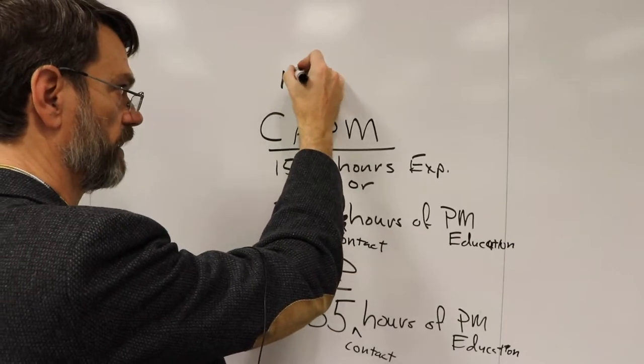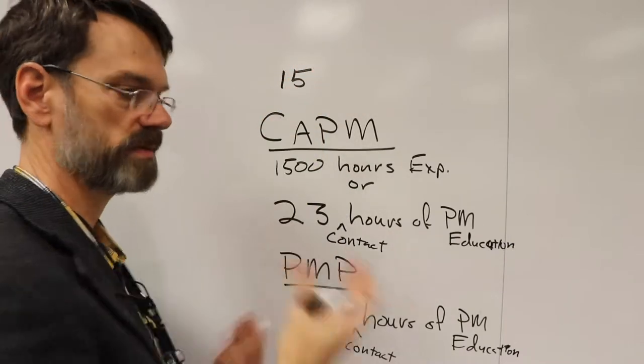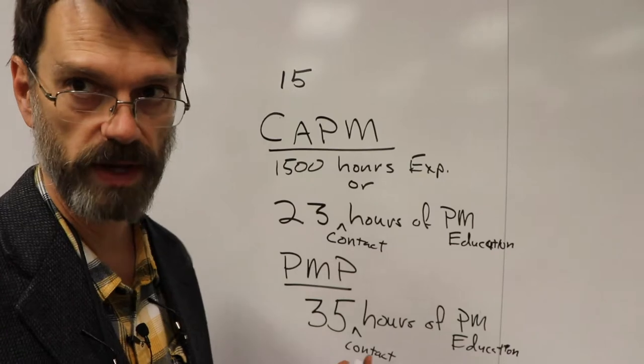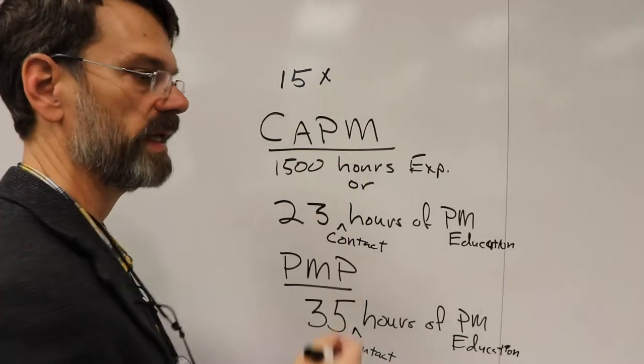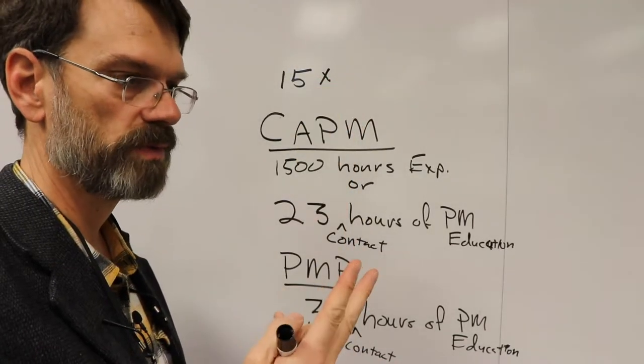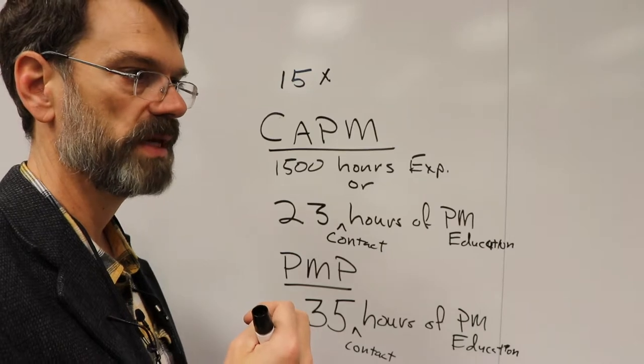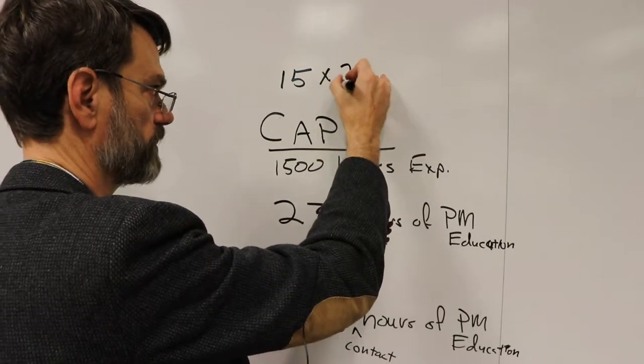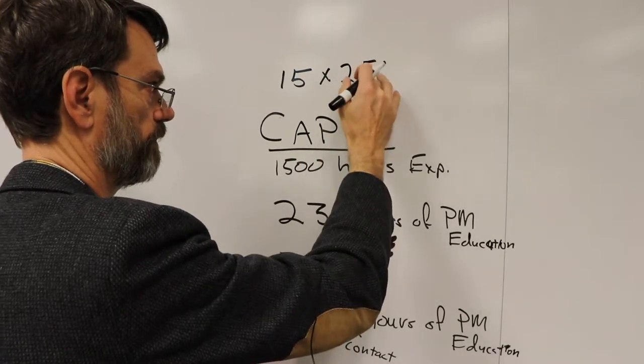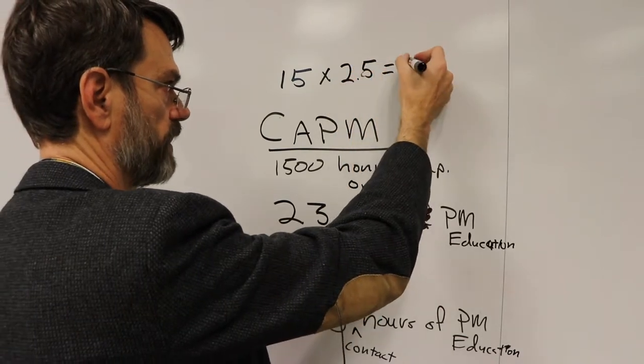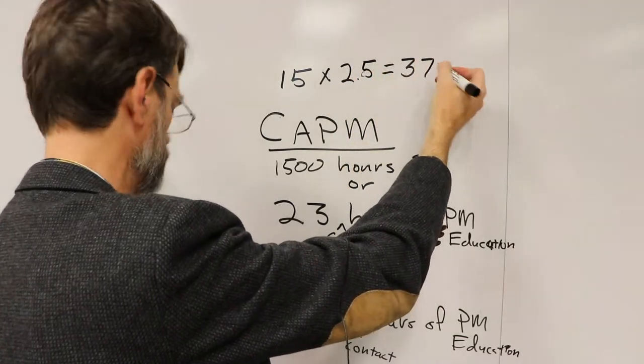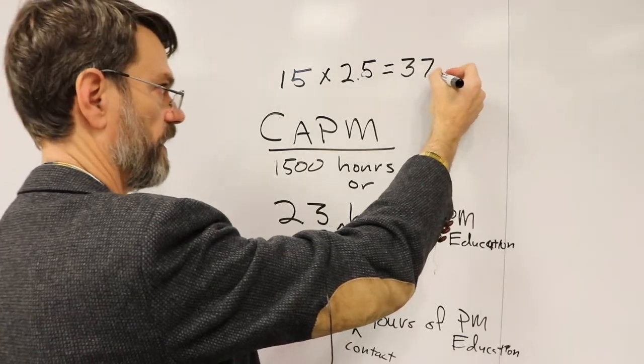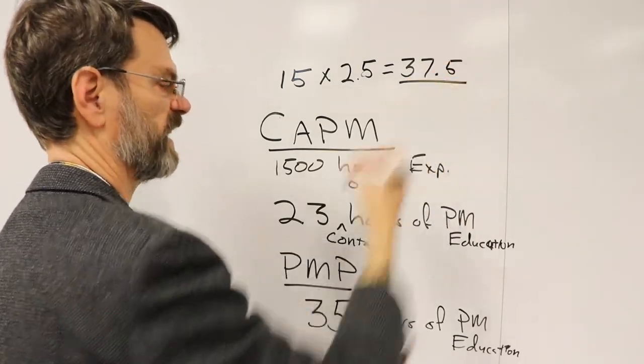So let's say that you have a class that meets for 15 weeks, maybe a 16-week semester, but we've got finals. And in my classes, we meet twice a week for an hour and 15 minutes. So two and a half hours a week.